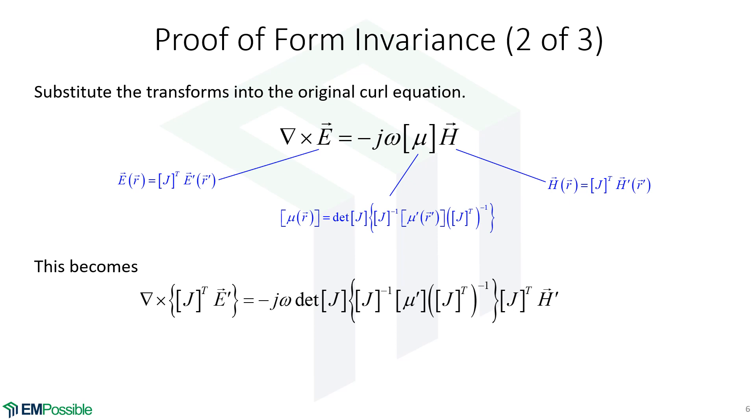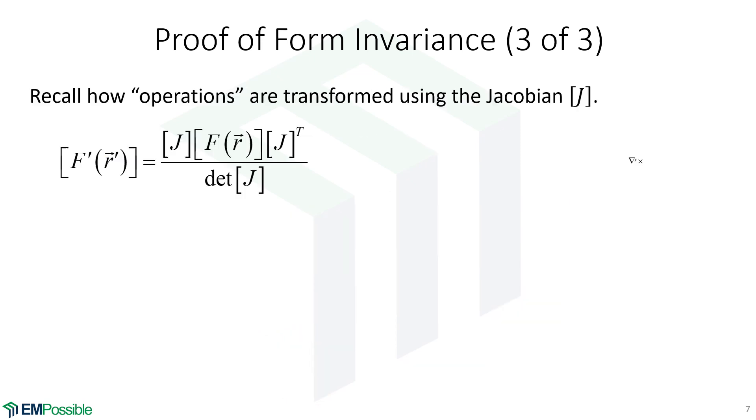The next thing we'll do is we'll simplify this and we'll bring all of those operations over to the left. And notice we've grouped all of these Jacobians and things with that curl operation. So let's remember how we transform operations. And this is the expression using the Jacobian of how we would transform the operation F into our transform coordinate system.